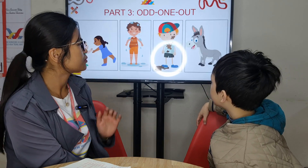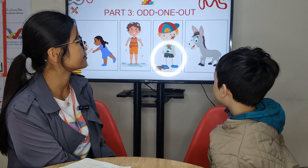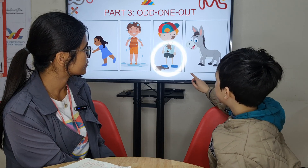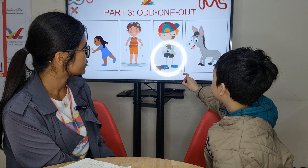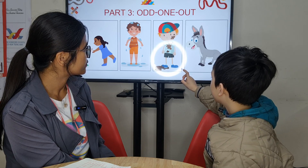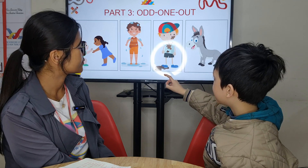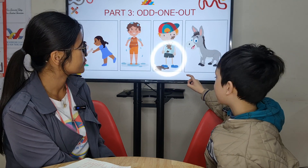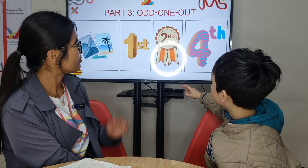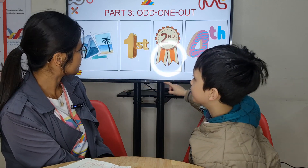Donkey is different. Why? Dirty, wet, and kind are adjectives. Very good, well done. How about this one — which one is different? Photo. Why? Third, second, fourth — those are ordinal numbers. Good.